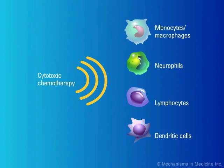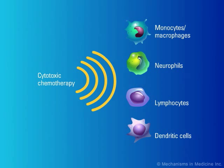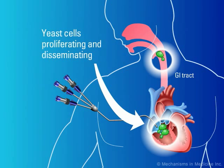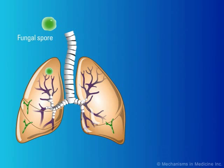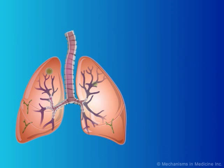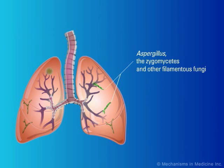Cytotoxic chemotherapy results in reductions of the absolute number of immune cells. In the absence of an effective immune response, invading fungal cells proliferate and disseminate widely. During the pre-engraftment phase, inhaled fungi including Aspergillus and the zygomycetes proliferate unchecked within pulmonary tissues and may disseminate beyond the lungs.